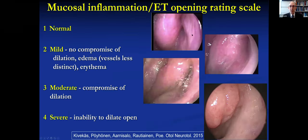When we see inflammation, we grade it — this is a validated scale from normal to mild, moderate, and severe/never opening. We score those to determine, if a patient needs balloon dilation, how long we're going to inflate the balloon. The maximum is two minutes. If I see only mild inflammation, I don't want to make them patulous, so I'll dial that down — maybe a minute and a half, maybe just a minute; I've even done as little as 30 seconds.